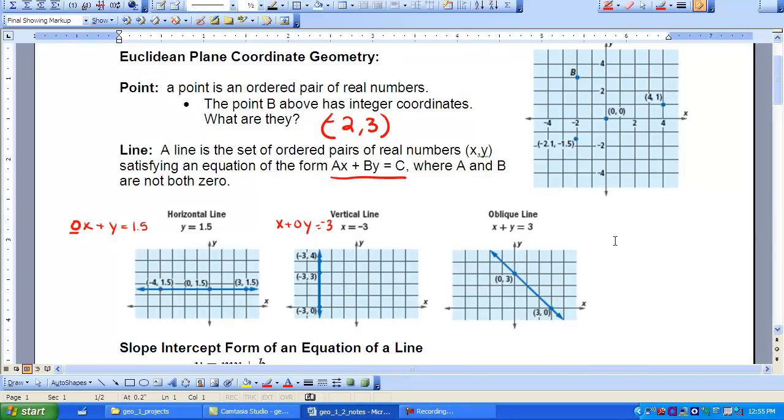As you can see here, I have three types of lines. I have the horizontal, the vertical, and the oblique lines, all of which are still made up by a set of ordered pairs that satisfy the equation.